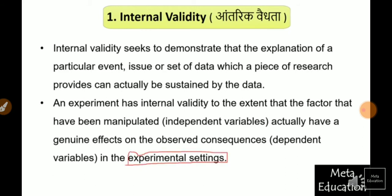If we talk about internal validity, we keep the meaning in mind. If we have created experimental settings and conducted an experiment, then if we say that the results of our research are internally valid, it means that keeping the same settings or same environment, we can say that the effect of the same independent variables on dependent variables will produce the same results. In simple words, we can say that our research is internally valid.